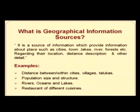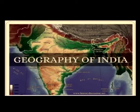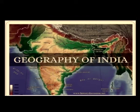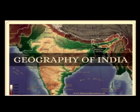Examples include the distance between cities, villages and talukas, the population size and structure, the rivers, oceans, lakes, and different cuisines. This is a geographical map of India where you can see the mountainous locations, the rivers, the different kinds of river banks, and which particular regions or locations a place is associated with. This map gives you a complete picture of the geography of India.